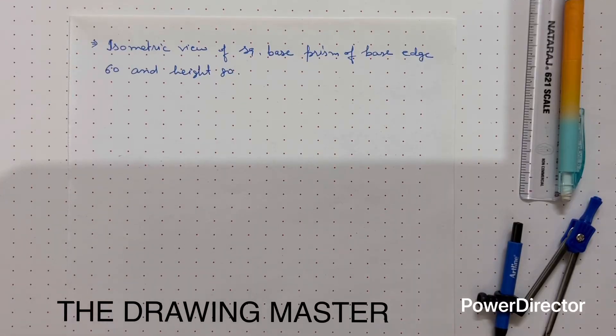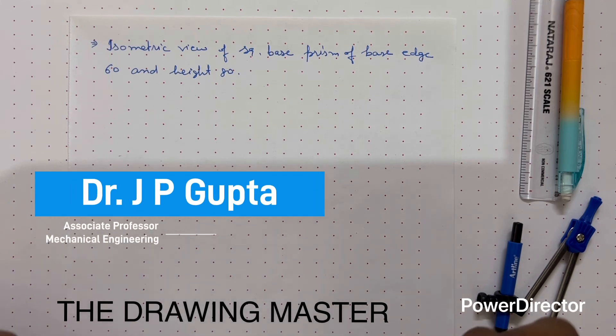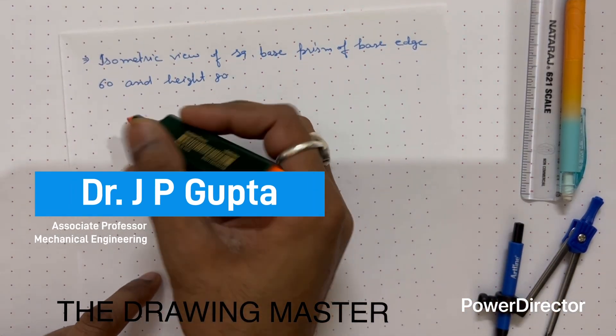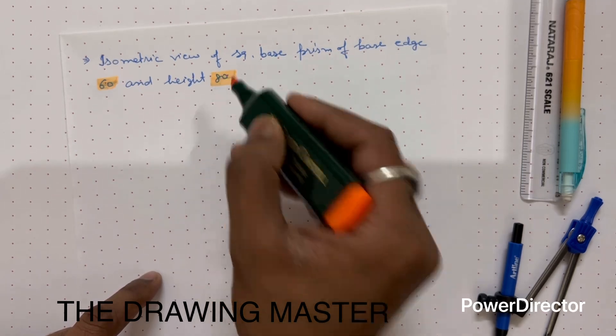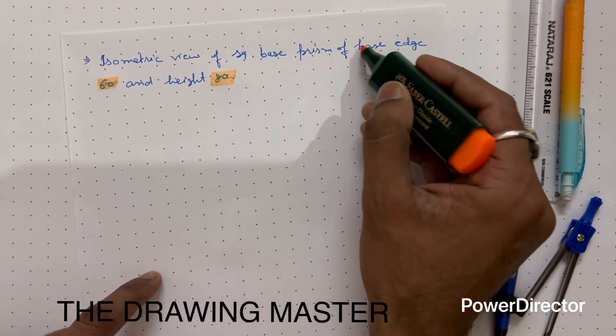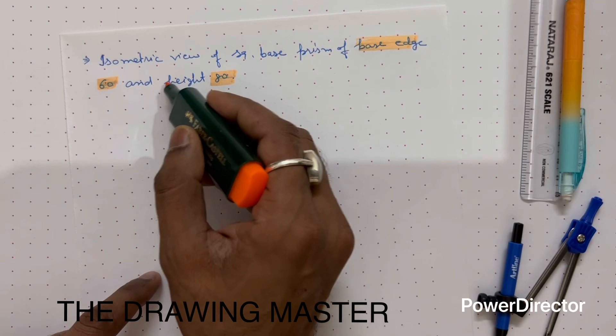Hello friends, in this video we will discuss isometric view of square base prism having base edge 60mm and height 80mm. Base edge is 60 and height is 80.